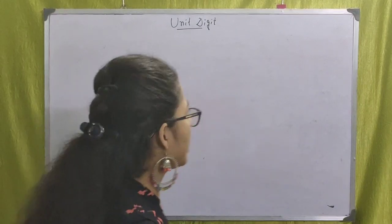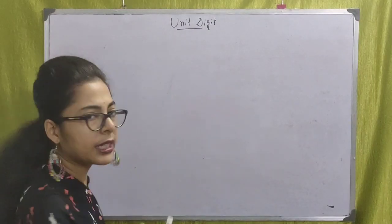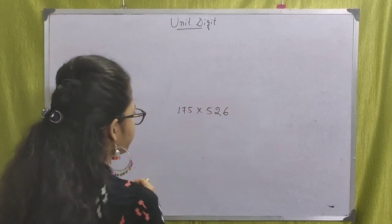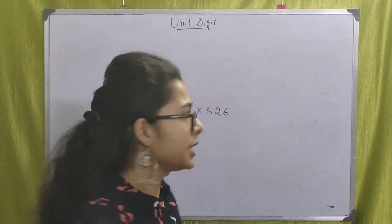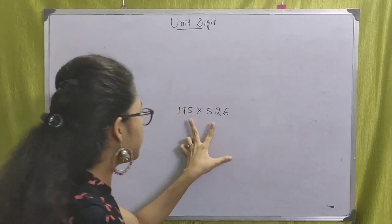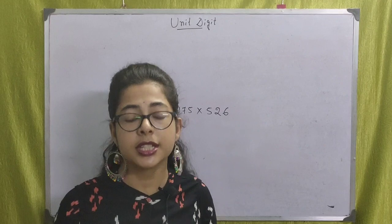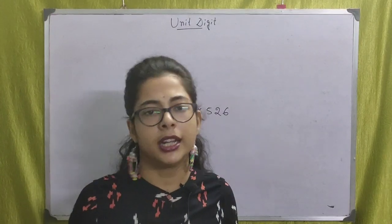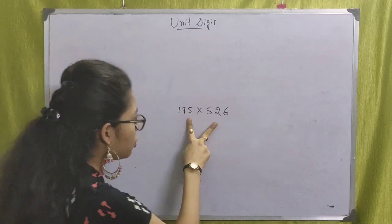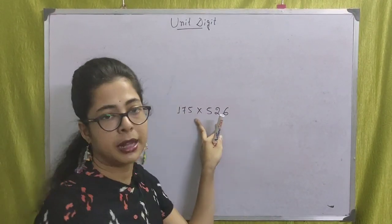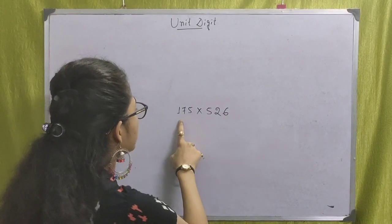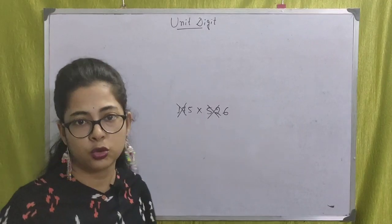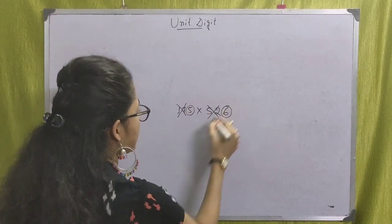First, we are going to talk about what is unit digit. Let's take the example 175 × 526. To find the unit digit, we are going to ignore 17 and 52, and just choose the unit digits 5 and 6.